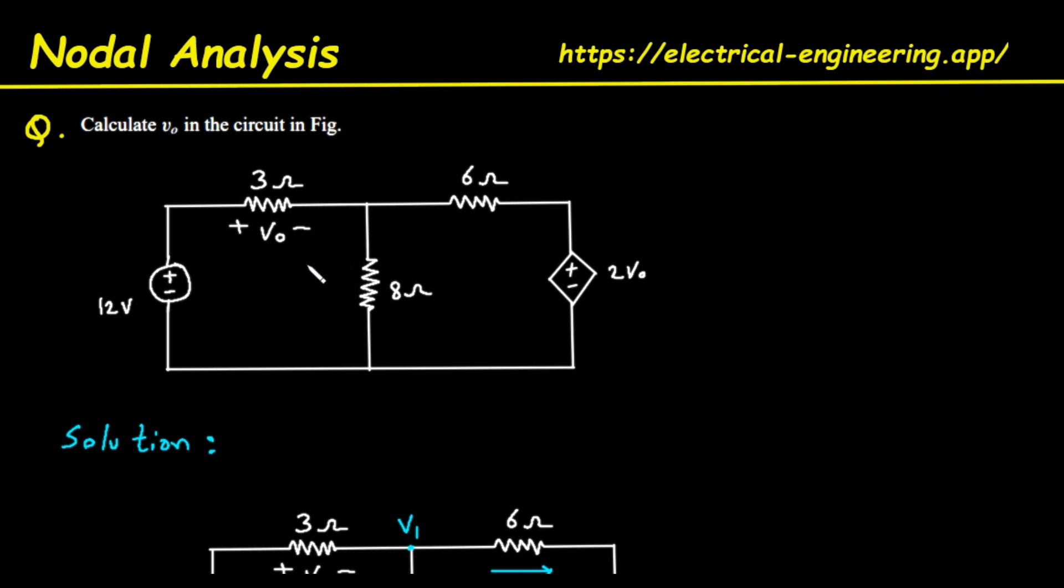First, let's take a look at the components in our circuit. On the far left, we have an independent DC voltage source which provides a constant 12 volts to the circuit. Connected to this source is a 3 ohm resistor. The voltage we need to find, V0, is the voltage drop across this 3 ohm resistor.